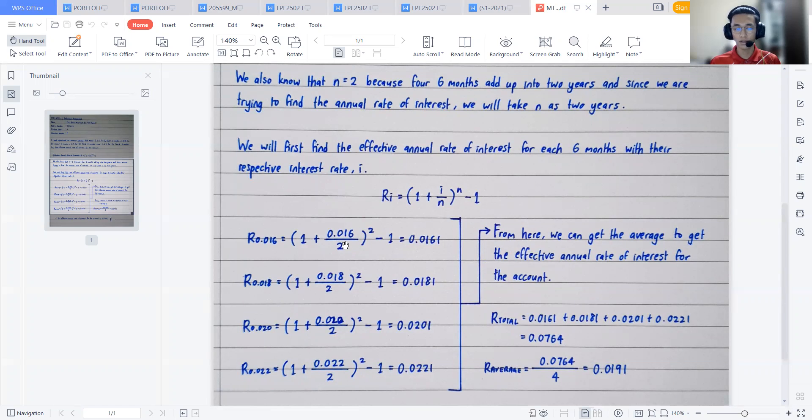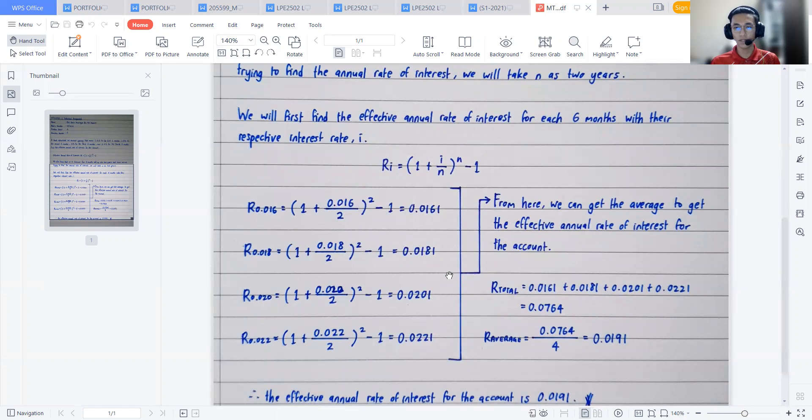We already got i in the form of percentage for each of the four six months. So we have r = 0.016, r = 0.018, r = 0.020, and r = 0.022. We will first calculate their own effective rate of interest individually. So for the first six month we got 0.0161, for the second six month we get 0.0181, for the third six month we have 0.0201, and for the final six month we have 0.0221.